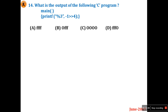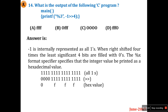Question 14: What is the output of the following C program? It prints the value of -1 right-shifted by 4 using printf with %x format. Minus one is internally represented as all ones. If it is 16 bits, after right-shifting four times, the most significant four bits are filled with zeros, giving 0x0FFF. So the hexadecimal representation prints 0FFF.